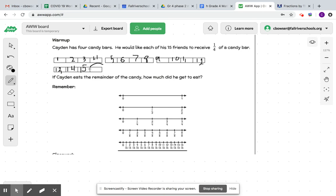If you said one piece of the candy bar is left or one-fourth is left, then you are correct. Because when we split four candy bars into fourths, we have 16 fourths.